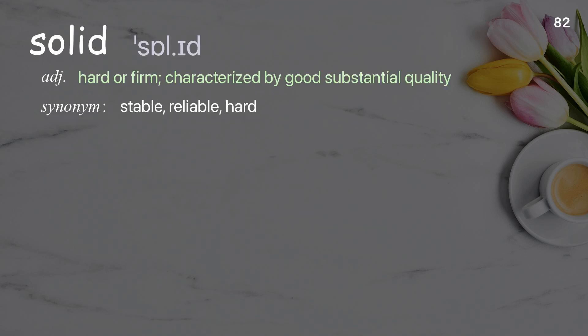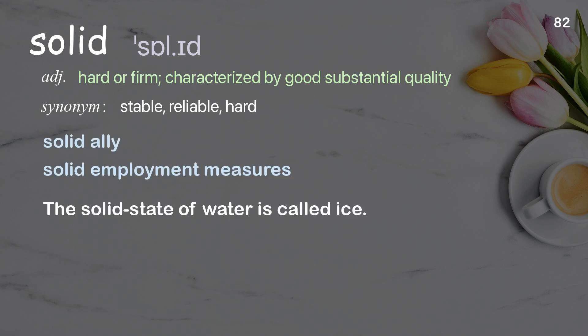Solid. Hard or firm, characterized by good substantial quality. Examples: Solid ally. Solid employment measures. The solid state of water is called ice.